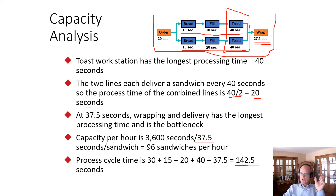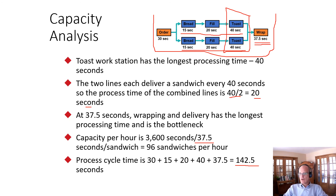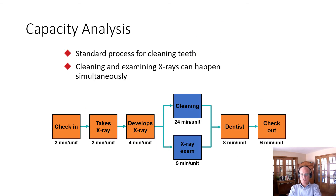The process cycle time is 30 + 15 + 20 + 40 + 37.5 = 142.5 seconds. This is important because it represents the minimum time from order to wrapped, completed sandwich — the minimum time a customer might wait. There may be additional waiting depending on flow, but 142.5 seconds is the minimum time to make a sandwich.